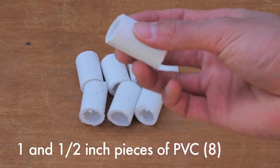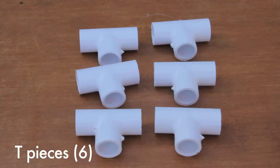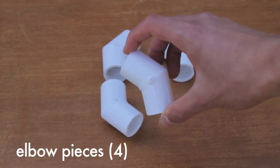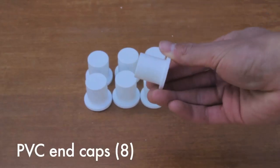Eight 1.5-inch pieces of PVC, two 5-inch segments, six tees, four elbow pieces, one coupling, and eight PVC end caps.